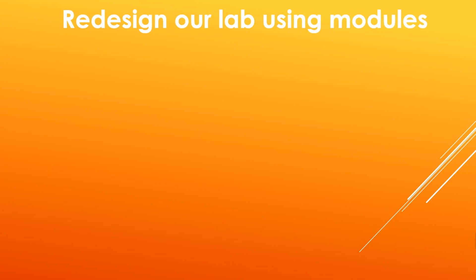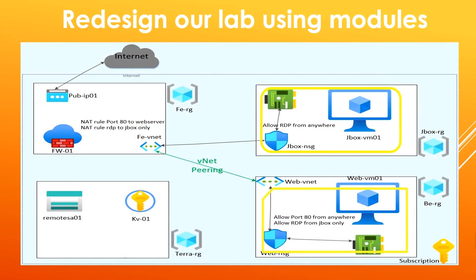Let us redesign our lab using modules by looking at the layout where we can reduce code duplication. I have enclosed the repeatedly deployed resources — deployed twice in our lab — in a yellow rectangle for the jumpbox resource group and a yellow rectangle for the backend resource group. These three resources have been duplicated in our code, in both the jumpbox and backend resource groups, so these can be modularized. We will create a root module for those resources and re-implement the lab by calling the root module through a child module.